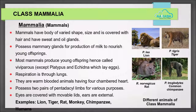Class Mammalia: mammals have a body of varied shape and size, covered with hair, and have sweat and oil glands. They possess mammary glands for production of milk to nourish young offspring. Most mammals produce young offspring directly, hence they are called viviparous — except platypus and echidna, which lay eggs. Respiration is through lungs. They are warm-blooded animals with a four-chambered heart. They possess two pairs of pentadactyl limbs. Their eyes are covered with movable lids and ears are external. Examples: lion, tiger, rat, monkey, chimpanzee, and humans.